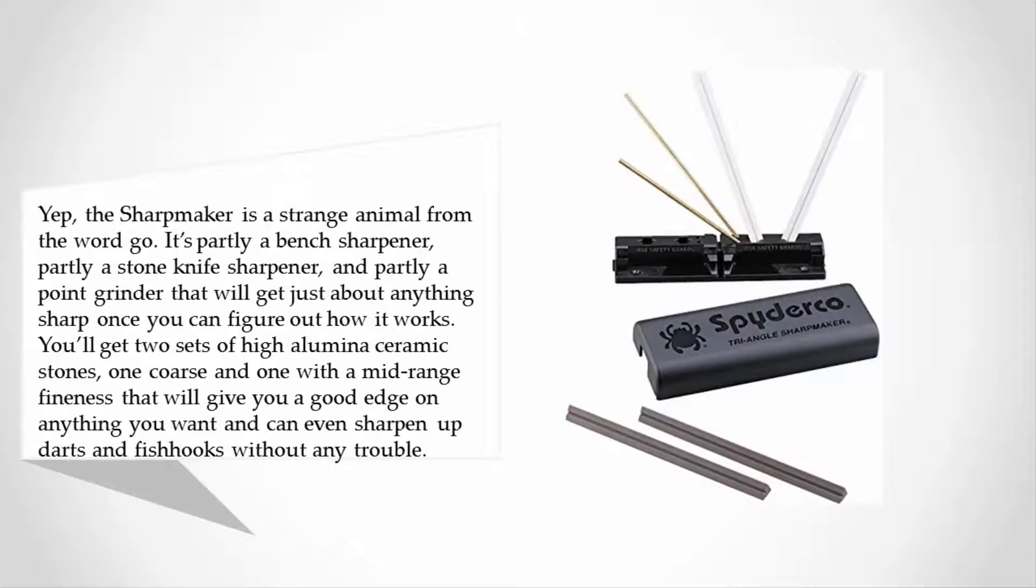You'll get two sets of high aluminum ceramic stones, one coarse and one with a mid-range fineness that will give you a good edge on anything you want, and can even sharpen up darts and fish hooks without any trouble.